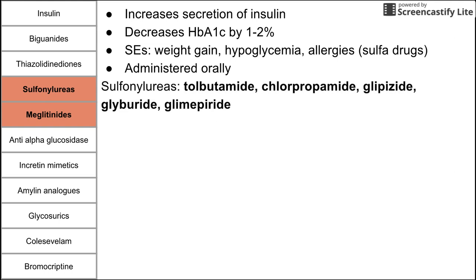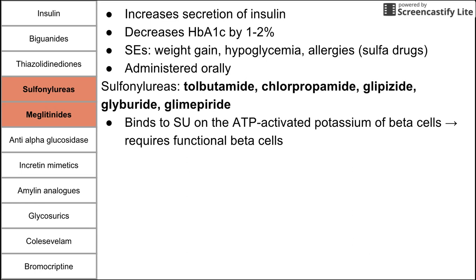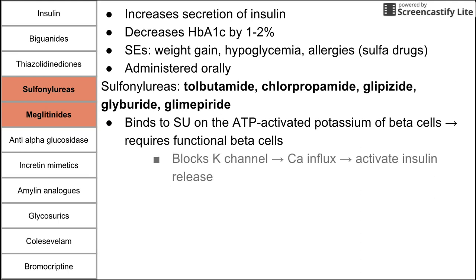The first secretagogue group is the sulfonylureas, broken into first and second generation. First generation includes tolbutamide and chlorpropamide. Second generation includes glipizide, glyburide, and glimepiride — all starting with 'gl' and ending in 'ide.' These bind to the sulfonylurea receptor on the ATP-activated potassium channel of beta cells — and they do require functional beta cells. They block that potassium channel, forcing beta cells to depolarize, which opens calcium channels, calcium rushes in, and insulin is released.